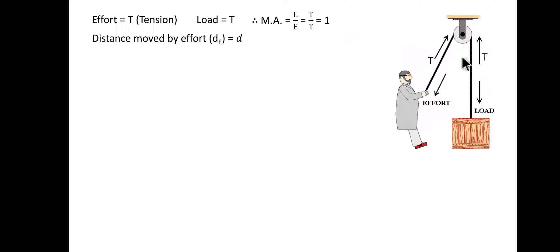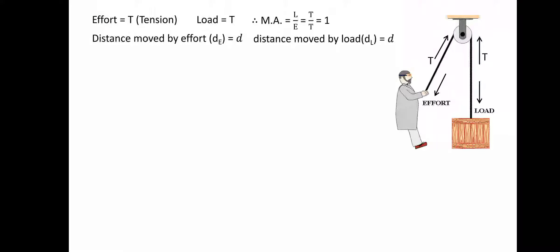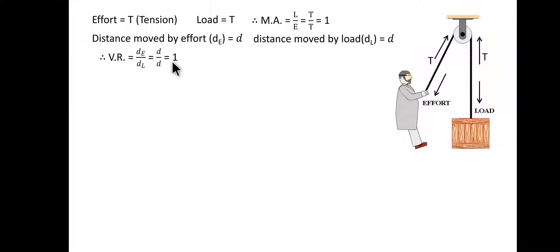When the rope is pulled, the effort point has a displacement. Let's say the distance moved by the effort point is d. When the effort point moves distance d, the load point also moves equivalently, so the distance moved by the load point is also d. The velocity ratio equals distance moved by the effort point divided by distance moved by the load point, which is d by d, equals 1. So the velocity ratio of a single fixed pulley is also equal to 1.